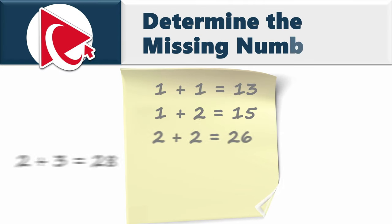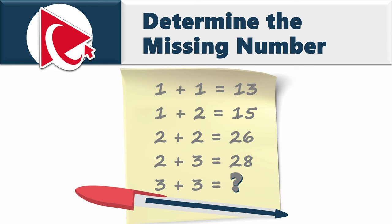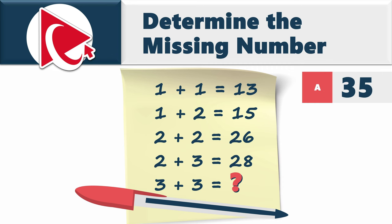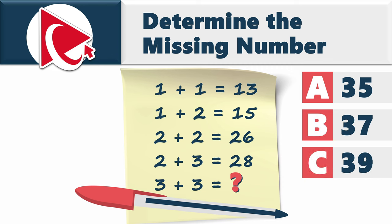You're presented with five unusual mathematical equations. The first is 1+1=13, then 1+2=15, 2+2=26, 2+3=28, and 3+3 equals the missing number. You need to calculate and select from: Choice A: 35, Choice B: 37, Choice C: 39, and Choice D: 41.